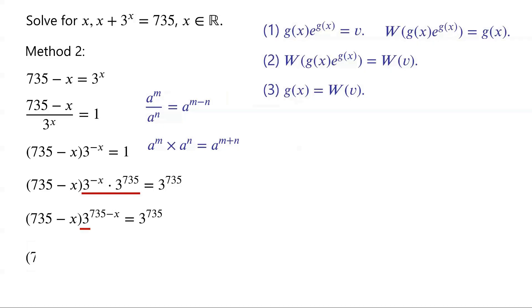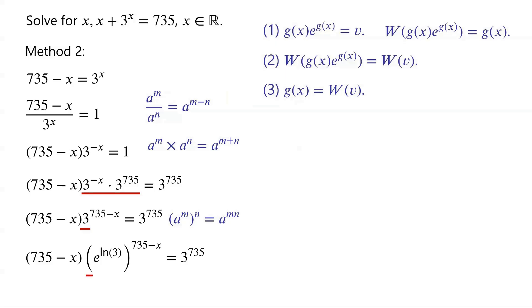3 can be written as e to the power of ln(3). By applying this, e to the power of ln(3), all to the power of 735 minus x,